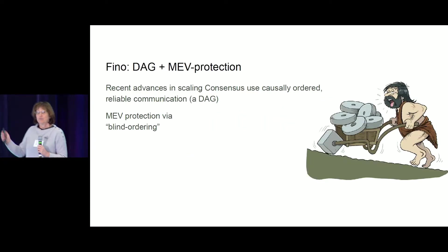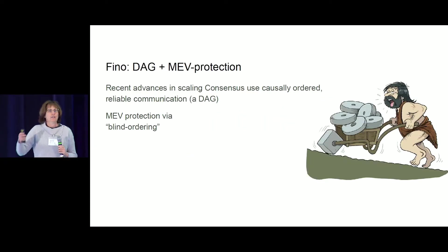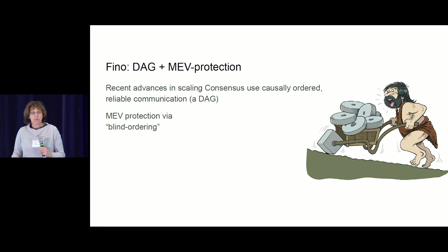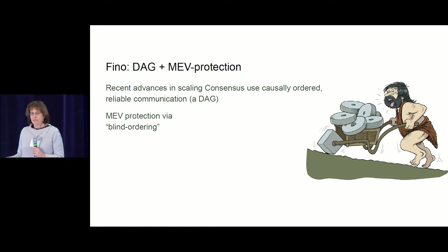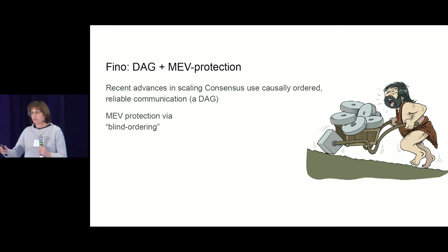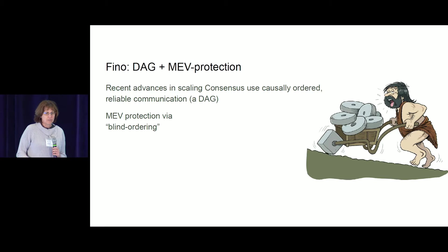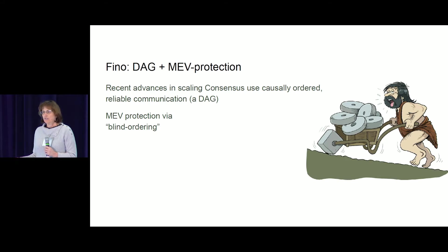What this talk does is put two recently known advances in this technology together. One is advances in the performance and throughput of Byzantine fault-tolerant or BFT consensus methods, especially ones relying on a substrate which is causally and totally ordered, creating a directed acyclic graph transport, or DAG. The other one is mitigation approaches and strategies for protecting against MEV.